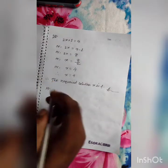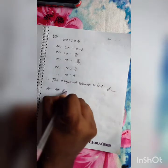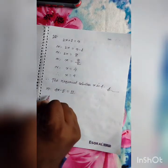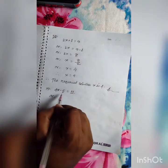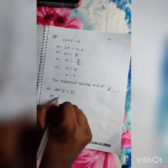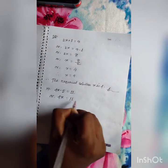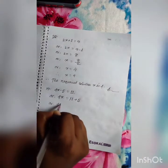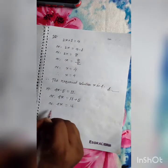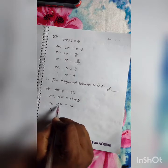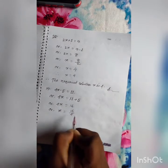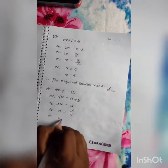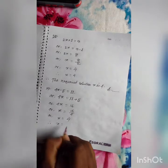Question number 19: 4X minus 5 equals 11. Same activities — at first we shift minus 5 from the left side to the right side. When we shift minus 5, it becomes plus 5. So we can write 4X equals 11 plus 5, which equals 16. Here 4 is multiplied with X, so when we shift 4 to the right side it will be divided. So X equals 16 divided by 4, which equals 4.